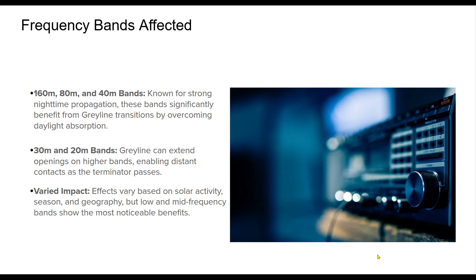Gray line propagation offers specific advantages for HF bands, particularly lower frequency ones like 160, 80, and 40 meters. These bands typically face high daylight absorption in the D-layer, which diminishes during gray line transitions. Even higher bands like 30 and 20 can see extended openings, aiding in long-distance DX operations. Seasonal changes in solar activity further influence the magnitude of these effects.